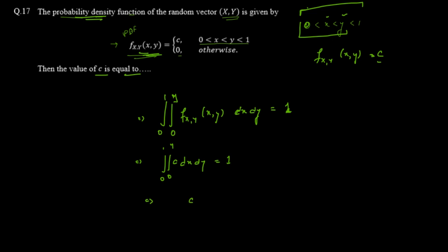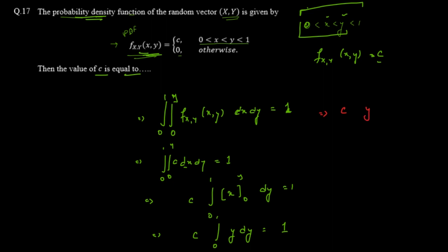C is a constant so it comes outside. Integrating with respect to x from 0 to y, we get x evaluated from 0 to y, which gives us y. So we are left with c times the integral from 0 to 1 of y dy equal to 1. The integral of y is y²/2, evaluated from 0 to 1.